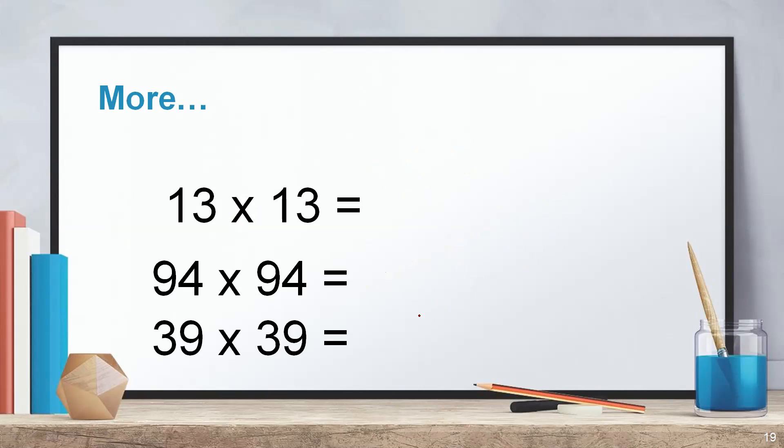13 times 13. First, write the square of 1 as a two-digit number. So you have to write it as 01. Write square of 3 also as a two-digit number which means 09. Multiply 1 and 3 then with 2. 1 into 3 is 3. 3 times 2 is 6. That also you have to write as a two-digit number. Then write the answer. It's 169. So 13 times 13 is 169.